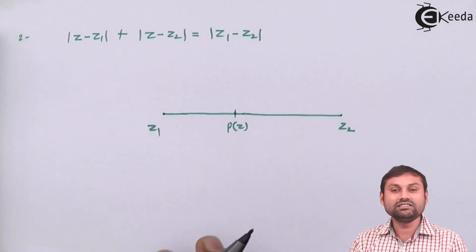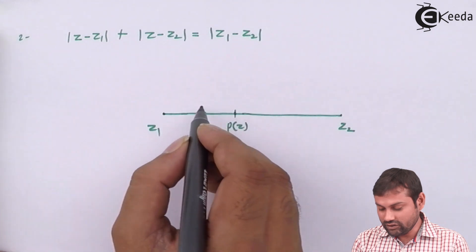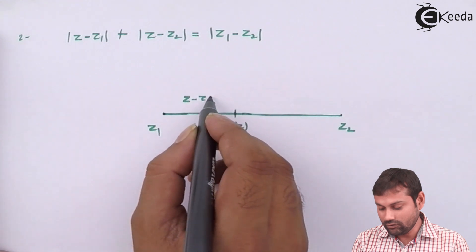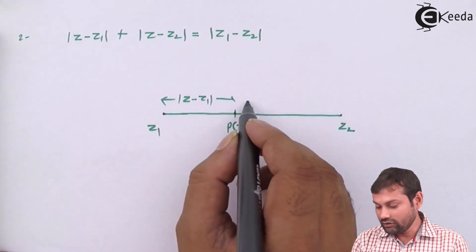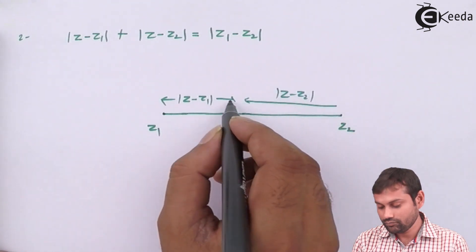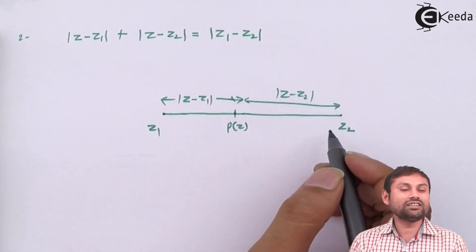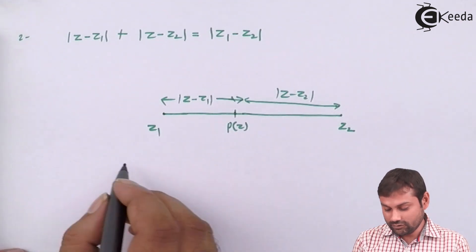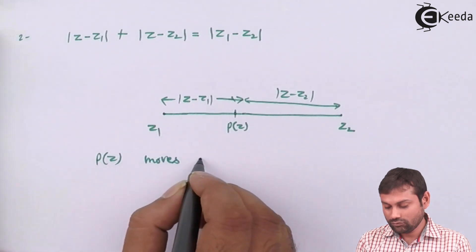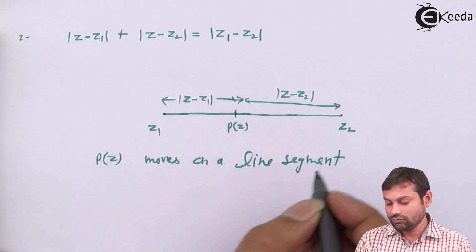This distance plus this distance they have written this distance. So we can say this is the locus of a line segment joining point z1 and z2. You can see this is z minus z1, this distance, and this distance is z minus z2. So here this is just a line segment.